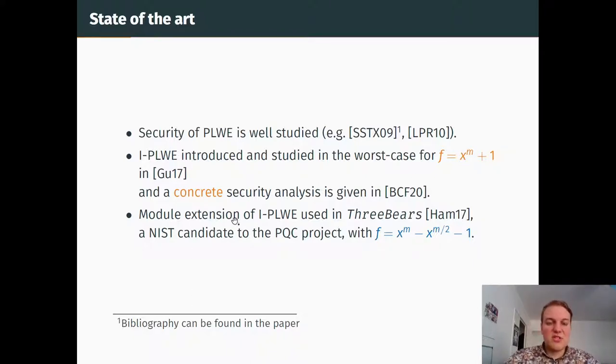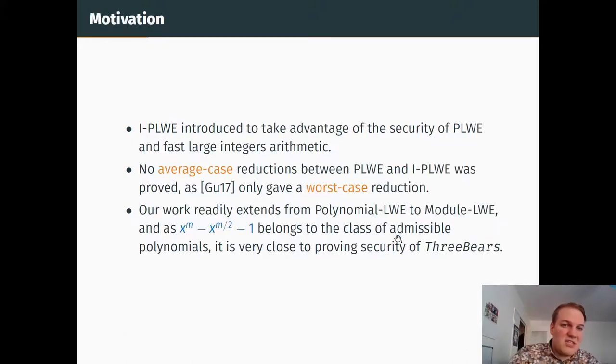However, a module extension of this problem was considered in one of the second-round NIST candidates, which is called FrodoKEM. As such, it's interesting to see if it's possible to get the reduction we found, notably because it's a way to prove the security of FrodoKEM. We paved the way for new cryptosystems based on IPLWE instead of PLWE, and it's interesting because you can take advantage of the security of PLWE and at the same time use fast large integer arithmetic.